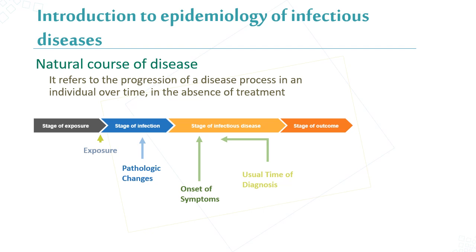Here we can see the natural course of disease, which refers to the progression of a disease process in an individual over time in the absence of treatment. The stages are: first, exposure; then infection and pathological change; then the stage of infectious disease with signs, symptoms, and diagnosis; and finally, the stage of outcome.